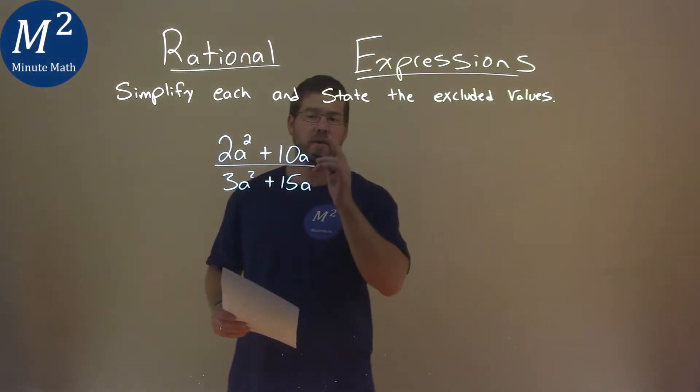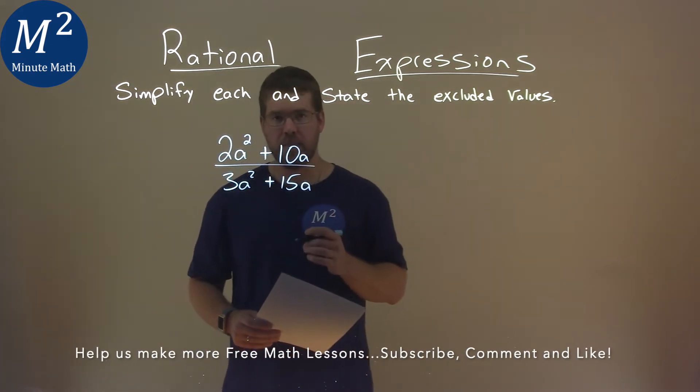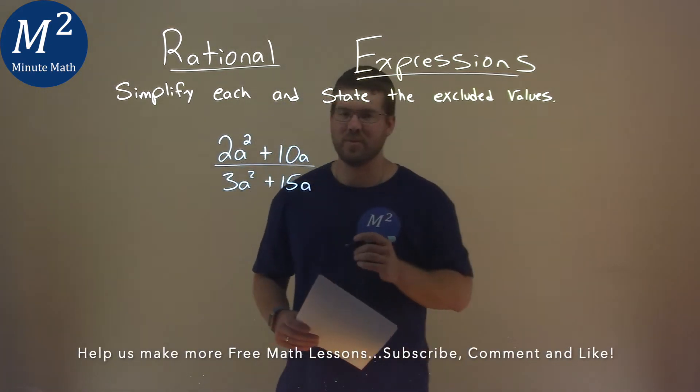We're given this problem right here: 2a squared plus 10a over 3a squared plus 15a, and we need to simplify and state the excluded value.